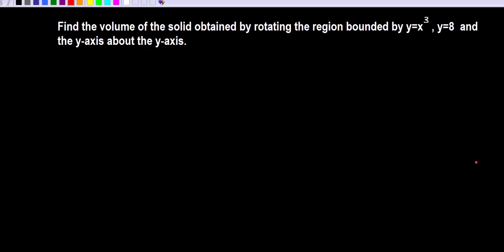In this question we want to find the volume of the solid obtained by rotating the region bounded by y equals x cubed, y equals 8, and the y-axis — so y-axis means x equals 0 — about the y-axis.